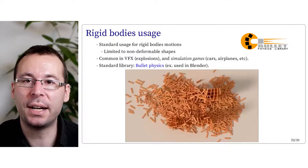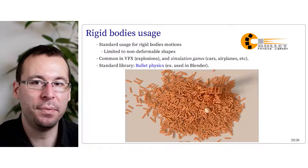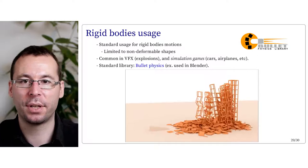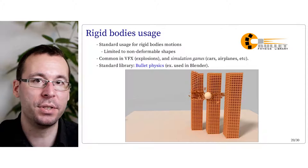Implementing a rigid body simulation from scratch is not easy, especially dealing with inertia and robust collision. If you are interested in what exists, there is a widely used library called Bullet Physics, which implements this and is used in multiple projects — for instance, it is the library used in Blender to model rigid body simulation. Rigid body simulation is very standard, used in visual effects for explosions and as the basic of game simulation for cars, airplanes, and so on.